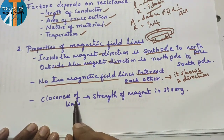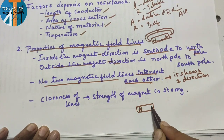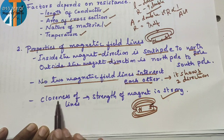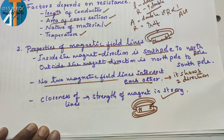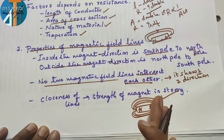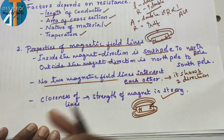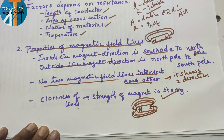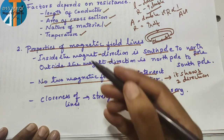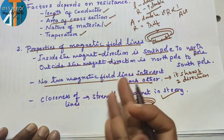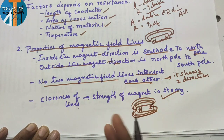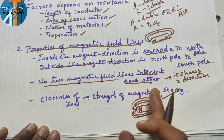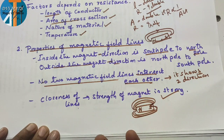Next: closeness of lines indicates magnetic strength. If the magnetic field lines are close to each other, the strength of the magnet is strong. So closeness of lines means strength of the magnetic field is strong. You may be asked: how do you say a magnet is strong? — because of the closeness of the magnetic field lines.